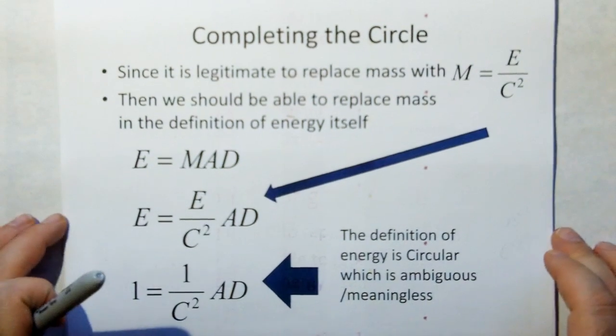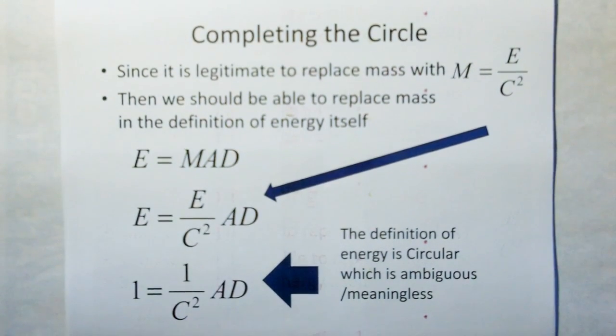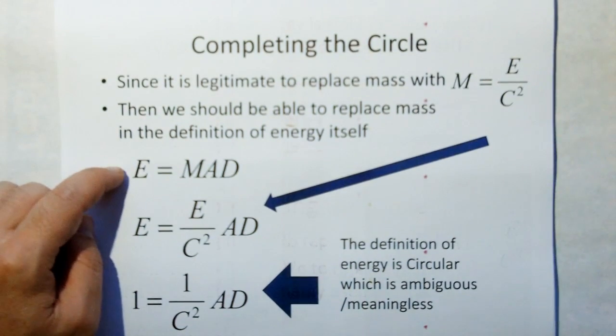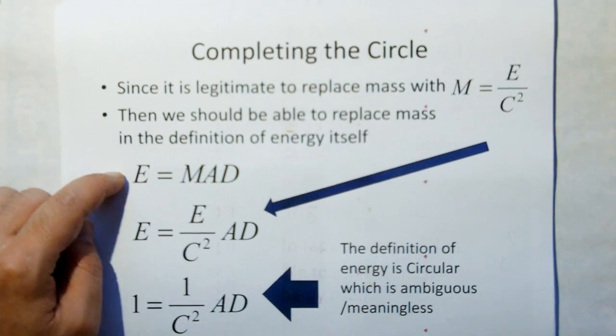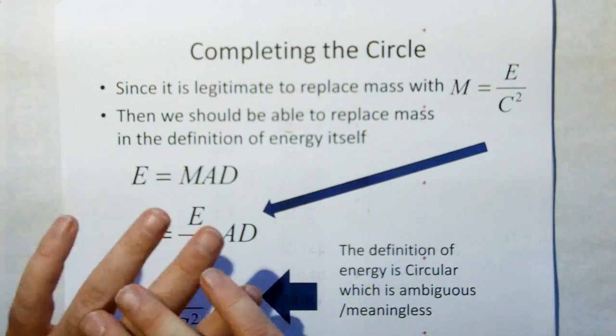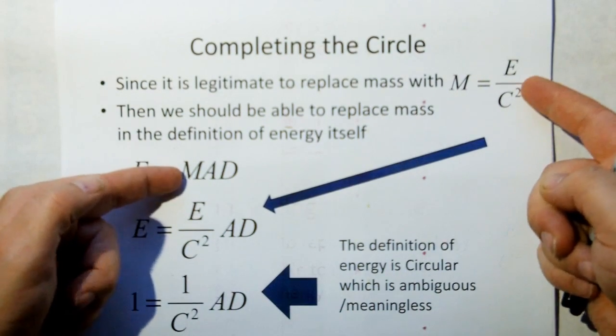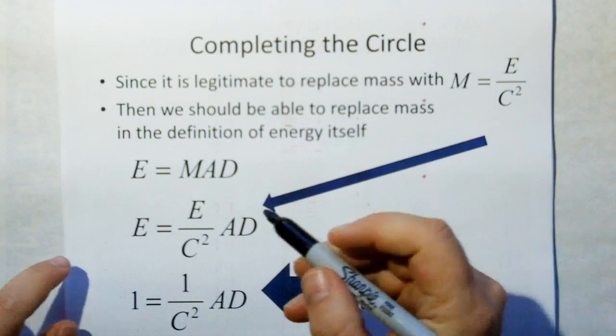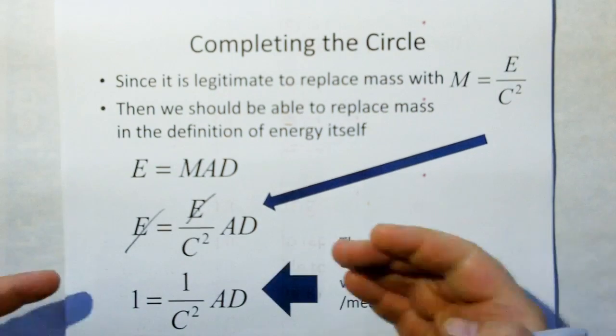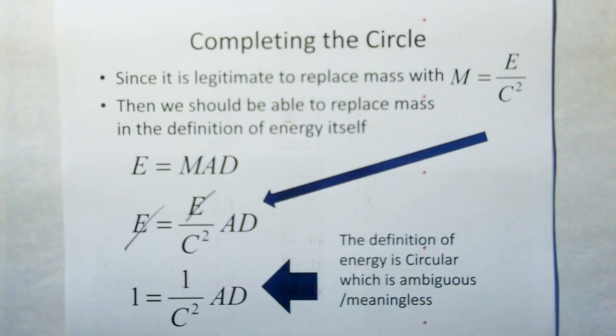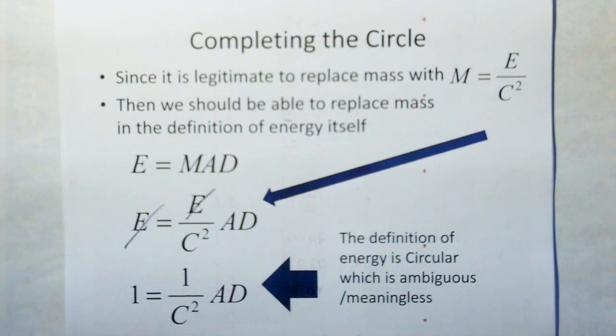Let's do what they do. Take mass from E equals mc squared, solve for mass, and substitute into the correct definition, the trivial definition for energy. We're taking mass here and substituting this equation. Look what we got there, there's your circular definition. Energy equals energy. Divide both sides by energy and you get the circular definition. So my friends, present day science is built on a circular definition which is ambiguous and meaningless.